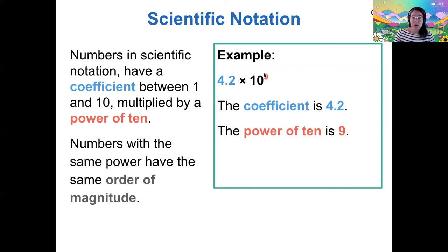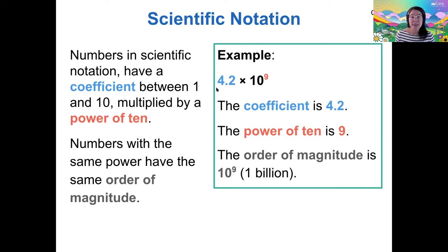Numbers that share the same power of 10 have the same order of magnitude. So I would say that the order of magnitude of this number, 10 to the 9, is 1 billion. So for example, if this number was 5.6 times 10 to the 9, it would be the same order of magnitude as this number.